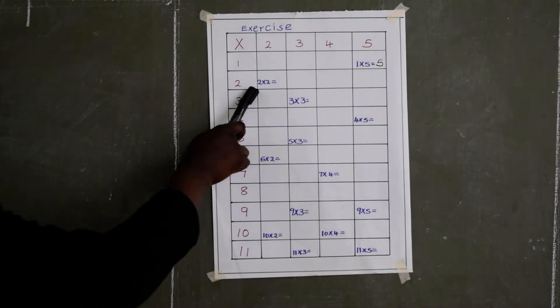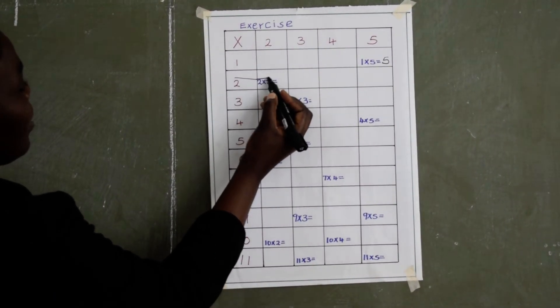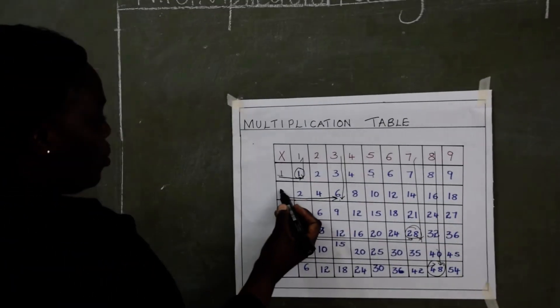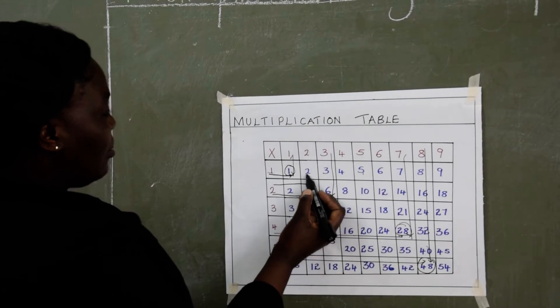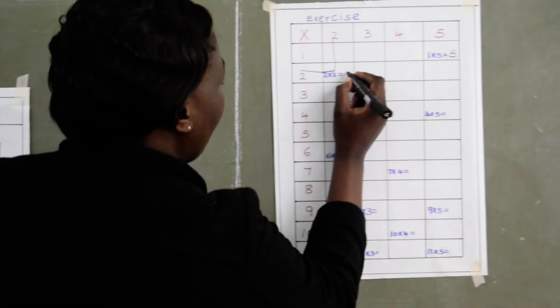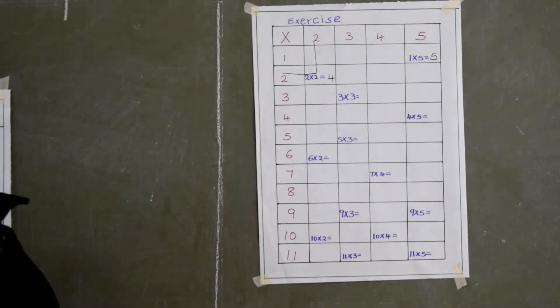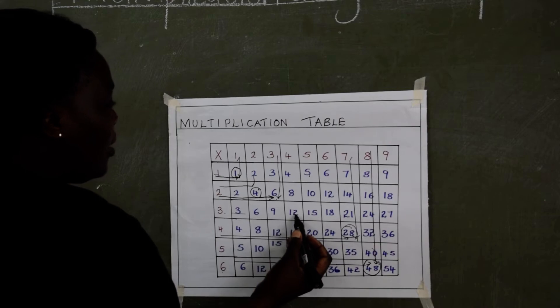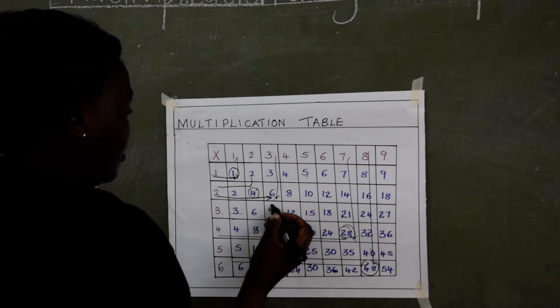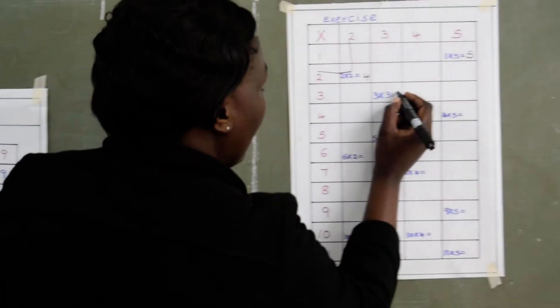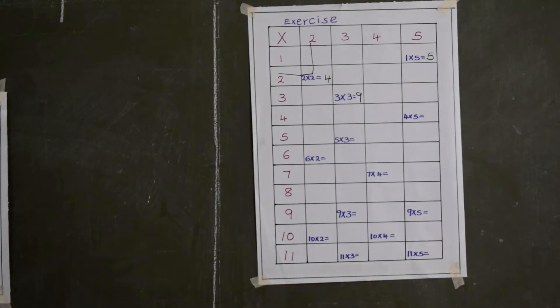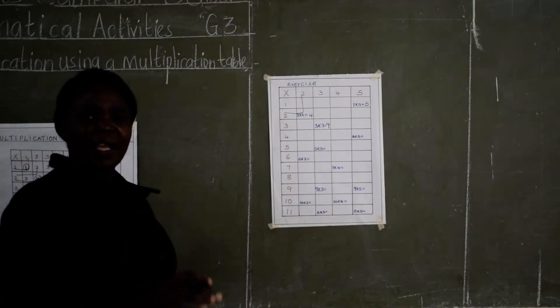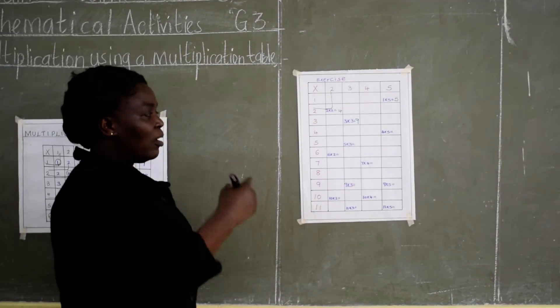Then 2 times 2. I will check here. 2 times 2 is 4. So I will write there, 4. 3 times 3. I will check. 3 times 3, it is 9. So I will put 9. Can you see? So it is easy. You don't even have to count your fingers or anything. Your work is just to check the multiplication table and then do it.